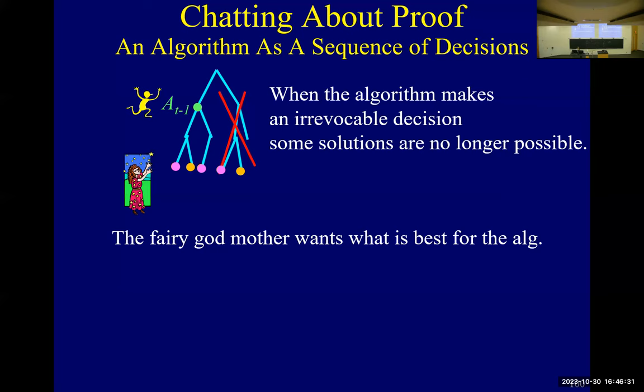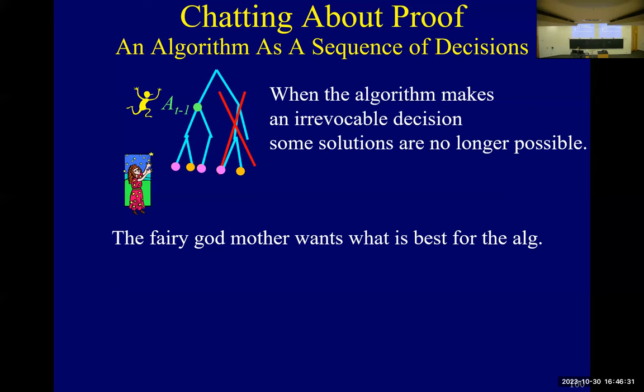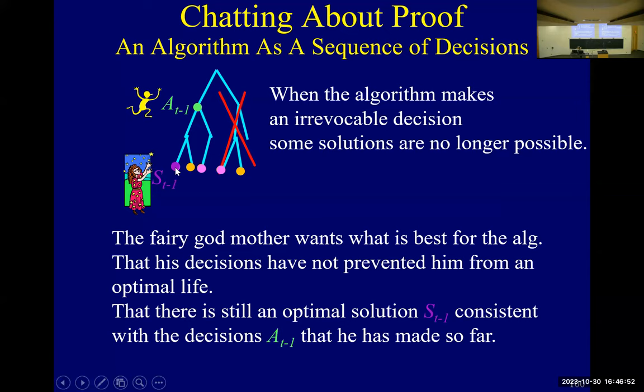The fairy godmother wants what's best for the algorithm — she knows he hasn't messed up yet. So she is holding an optimal solution, the dark purple one, which is consistent with what the algorithm has done. It's one of the optimal solutions that she's holding. She wants him to not make decisions that prevent him from an optimal life.